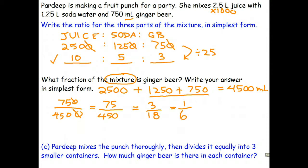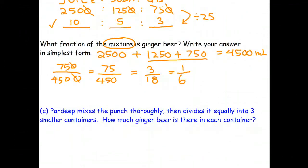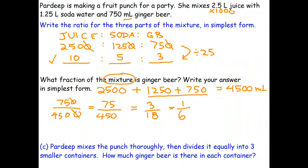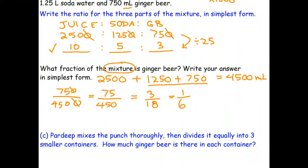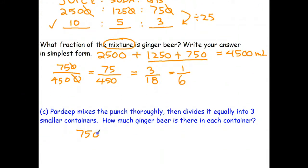Let's look at this last question. Pardeep mixes the punch thoroughly then divides it equally into three smaller containers. How much ginger beer is there in each container? Well this is actually quite a silly question because I'm not going to use ratios for this. I know that I have 750 ml of ginger beer. So 750 divided evenly by three means each container contains 250 milliliters of ginger beer. So I suppose the point of that question is sometimes you don't need to use ratios. You can answer questions in a simpler way.